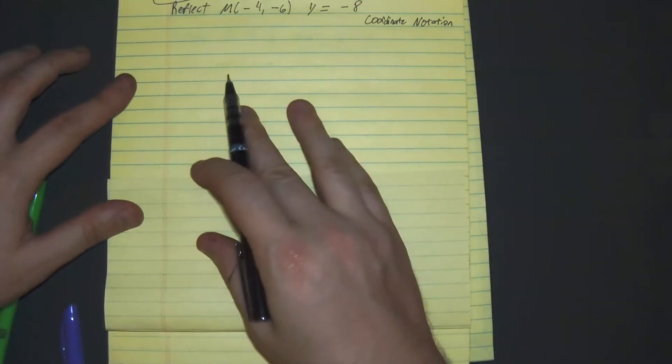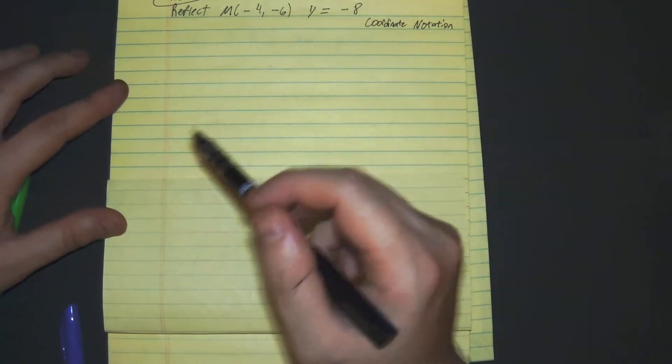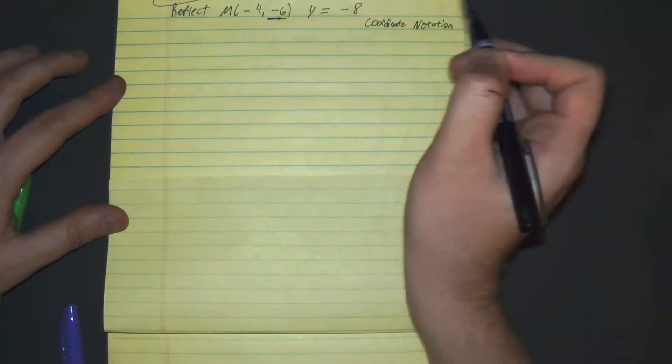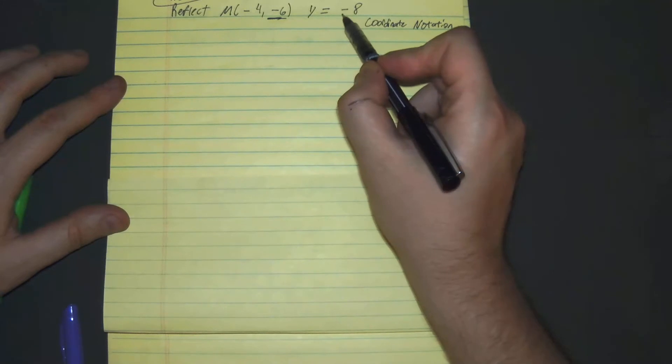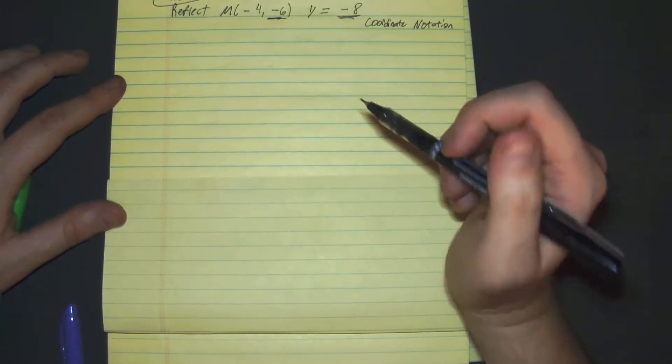Alright, so when we're looking at this, what we need to focus on is the y values. Negative 6 is greater than negative 8. Therefore, we're going to use the rule we're adding.